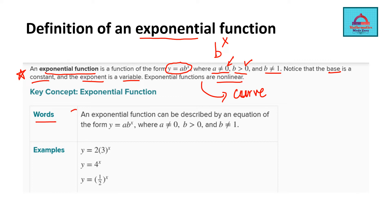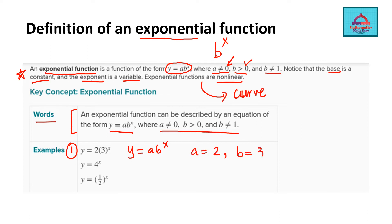Quick recap: y = a × b^x, where a and b are the two values you need to find to define your exponential function, with the three restrictions we discussed. In the first example, comparing with the definition, a = 2 and b = 3. Checking the conditions: a is non-zero (it is 2), b = 3 which is not equal to 1, and it is positive. All conditions are satisfied — this is a well-defined exponential function.